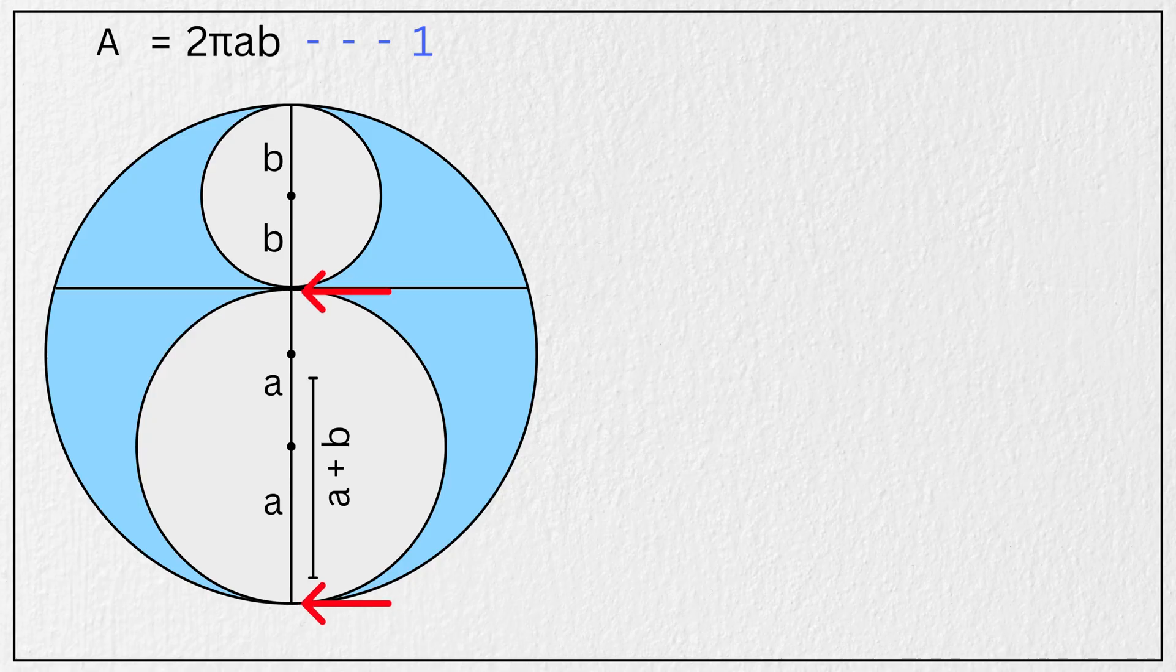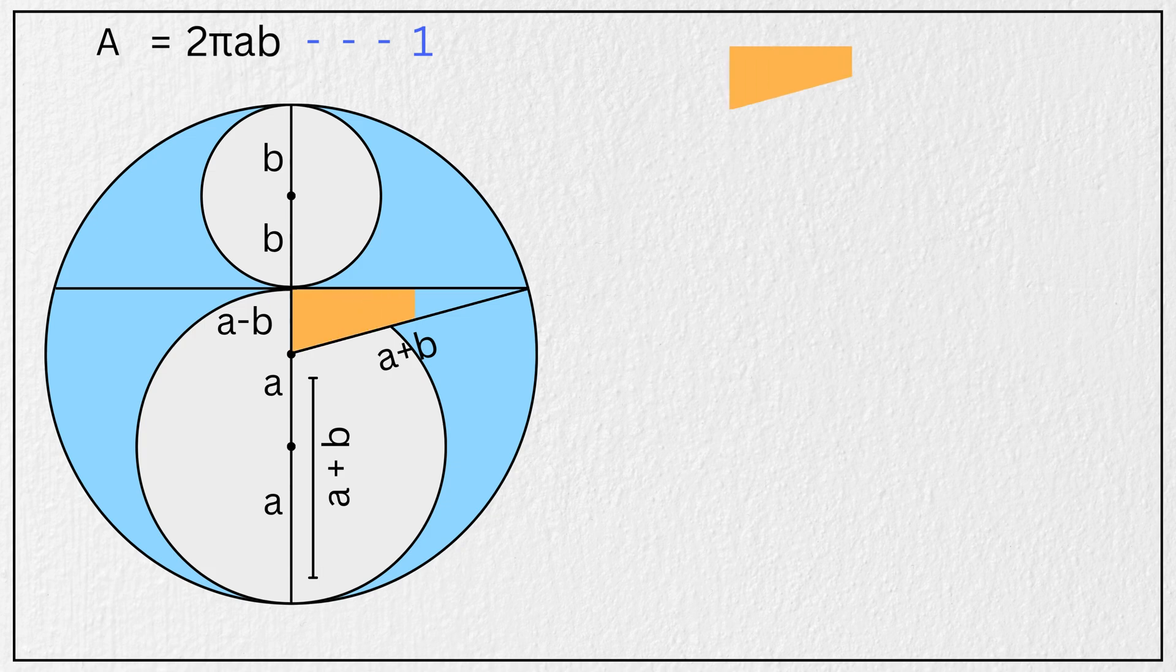Now look carefully. If this length here is 2 times A, and this length here is A plus B, then this remaining length will be 2 times A minus the length A plus B, which simplifies to A minus B. Now let's draw radius from the center of the larger circle, forming a right-angled triangle like this.